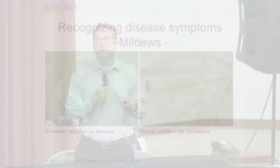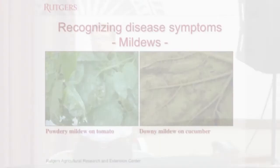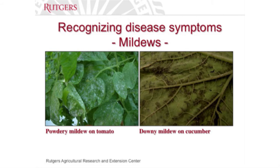Downy mildews are a little different. Downy mildews only sporulate on the bottom sides of leaves — they won't sporulate because of the direct UV light. If you're seeing white sporulation all over the plant surface, you're most likely dealing with a powdery mildew. If you see purplish-brown sporulation only on the bottom sides of the leaf surface — visible with a hand lens — you're most likely dealing with a downy mildew. That's how you tell the difference.